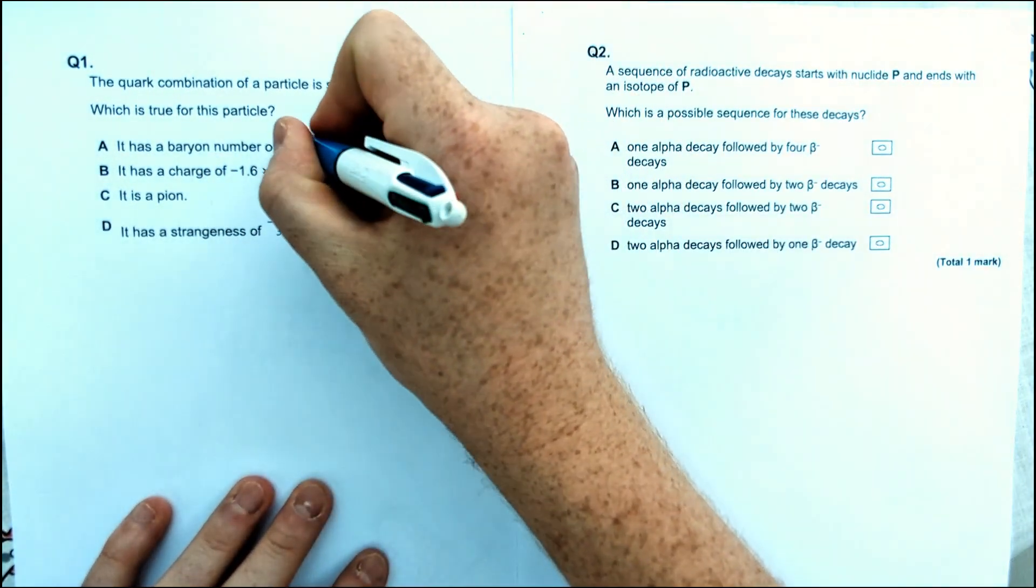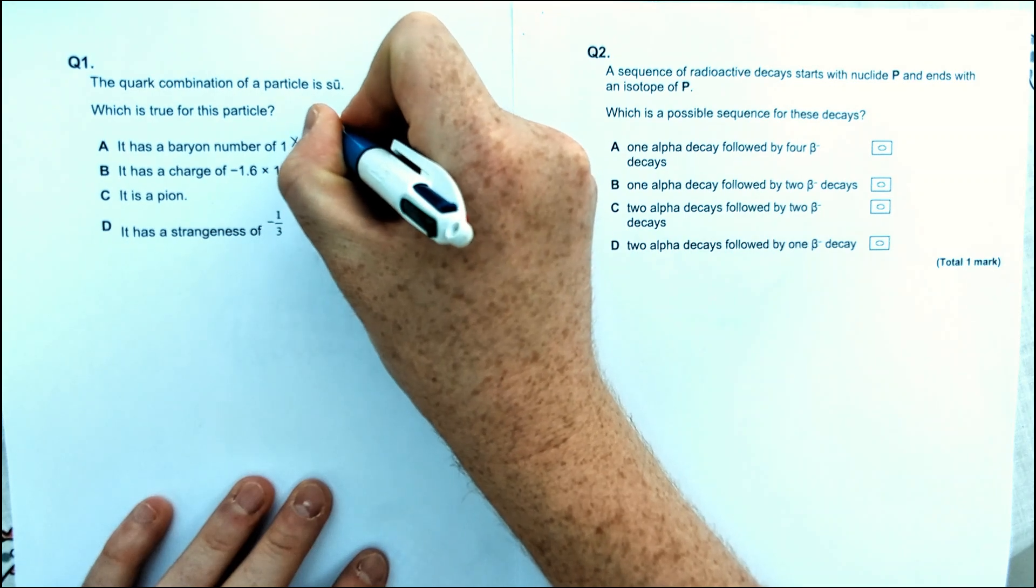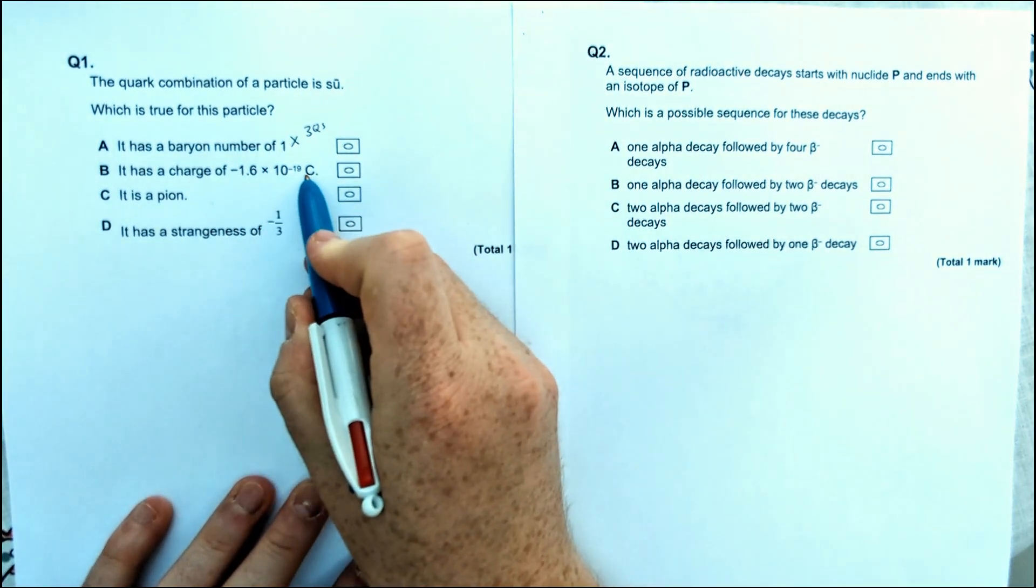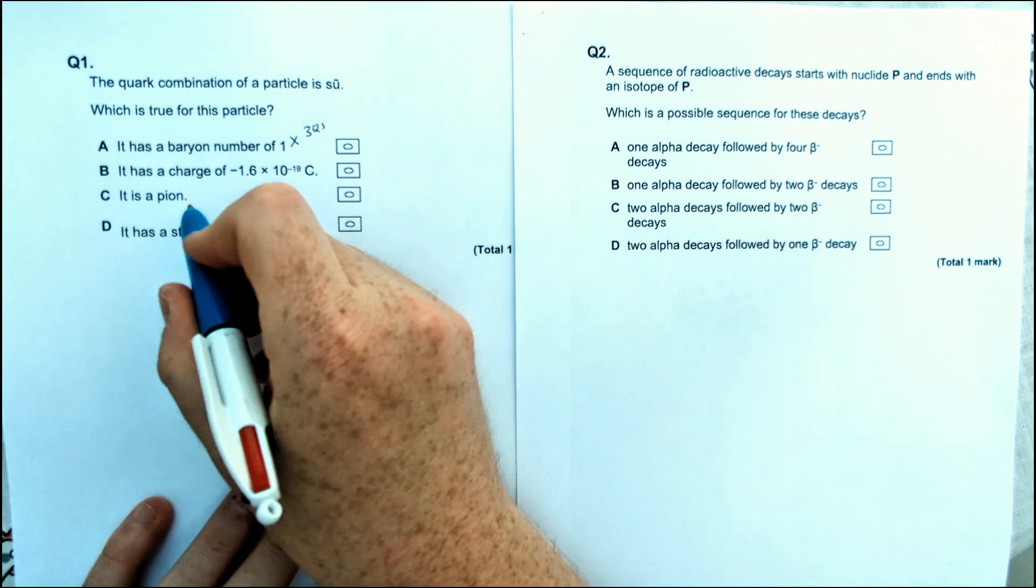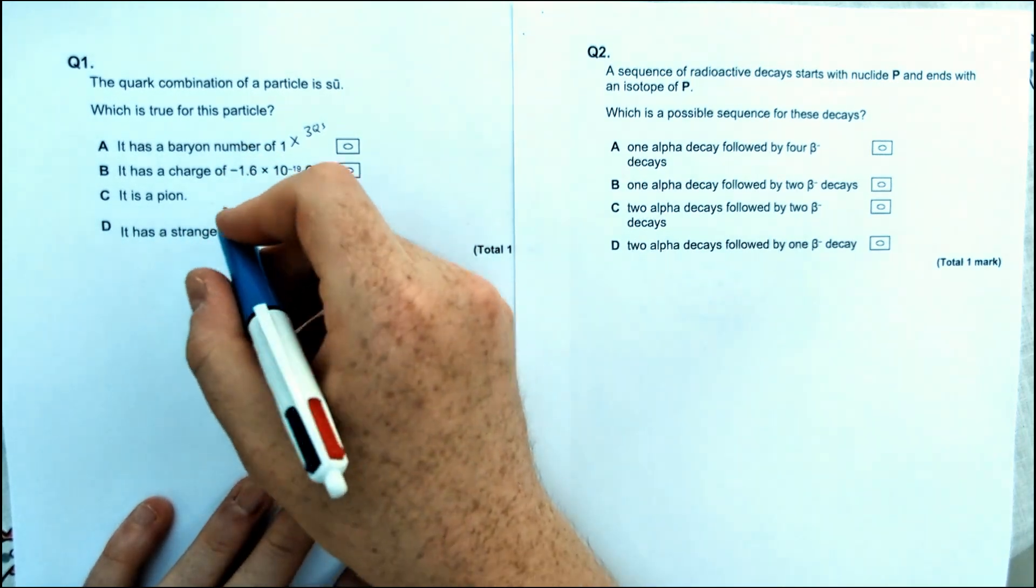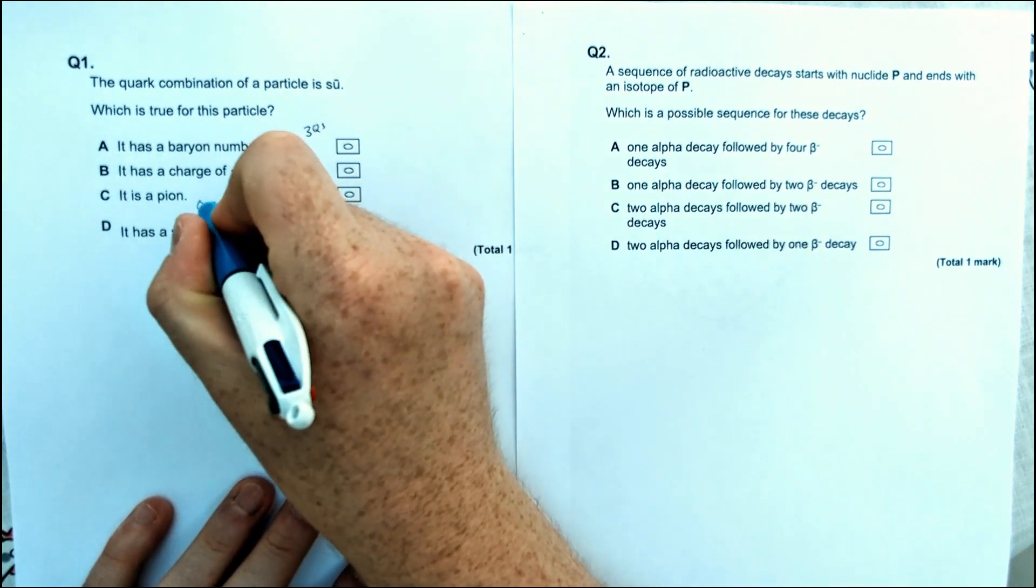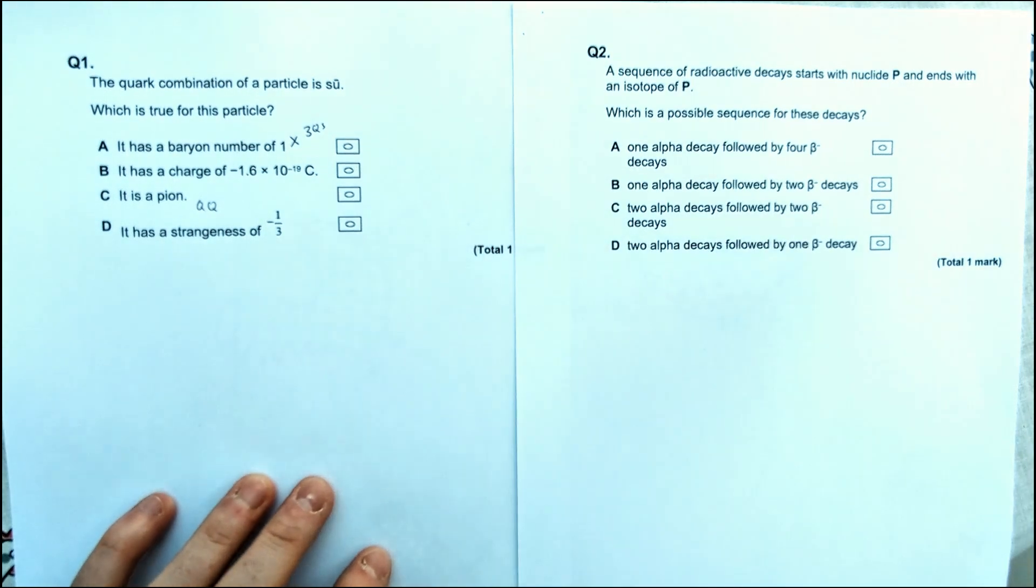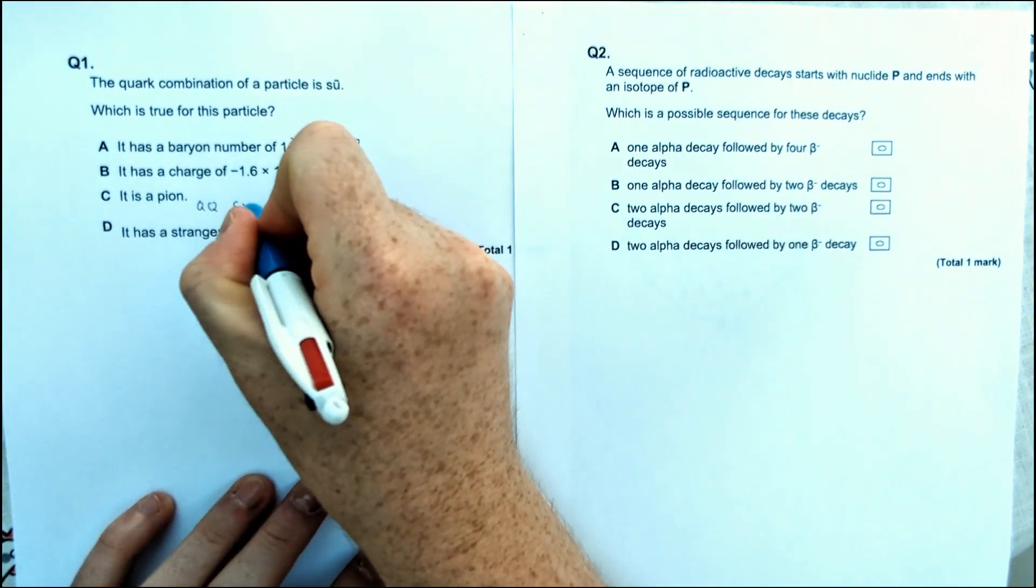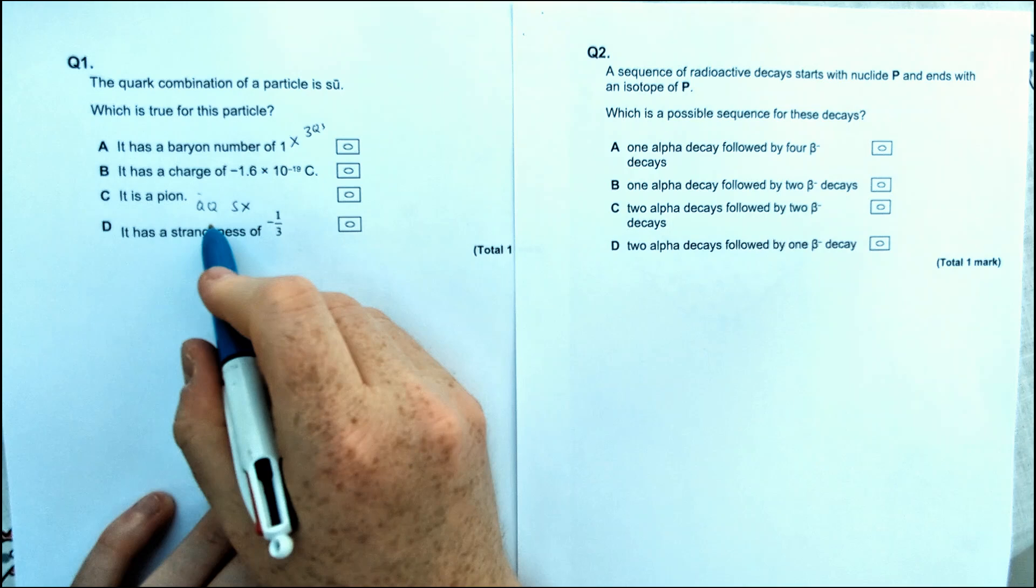So baryon number of 1, note that it has to be 3 quarks for that to happen. Charge, we could come back to that one later. It's definitely not a pion because a pion has to be a quark and an anti-quark pair, but it also has to be no strange quark in it.